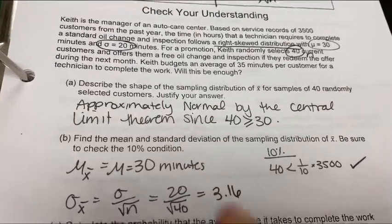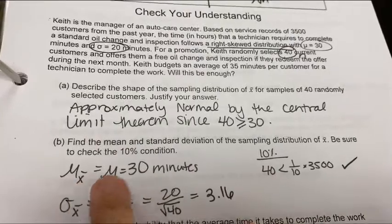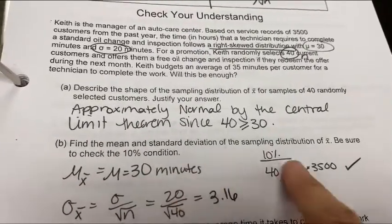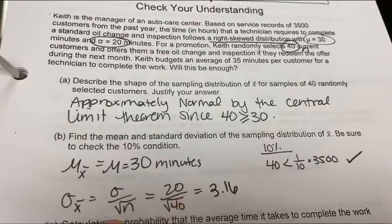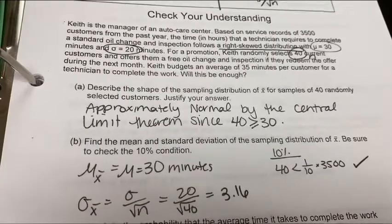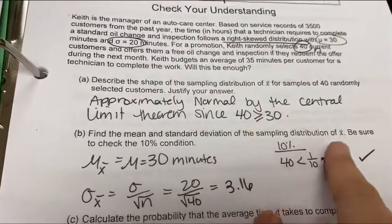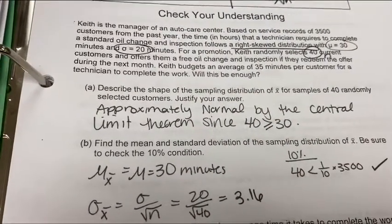What's next? Find the mean. Well, the mean of the sample should equal the mean of the population, 30 minutes. But the standard deviation is going to be different because we're taking a sampling distribution. See how it's asking for the sampling distribution. So does this apply?